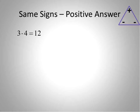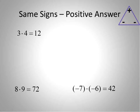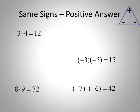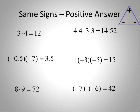Let's go ahead and solve a couple of these. First, some examples with the same sign that get a positive answer. A positive times a positive — both the same sign — gives a positive result. And a negative times a negative — same sign — also gives a positive result. This also works with decimals: positive times positive, or negative times negative decimal, both give a positive answer. If the signs are the same, your result is going to be positive.